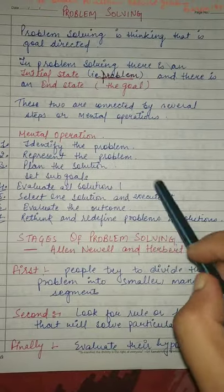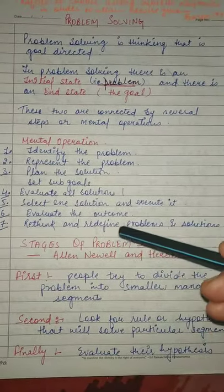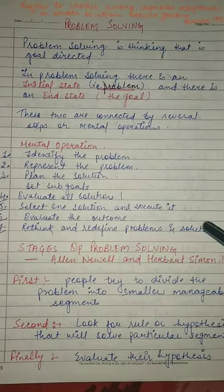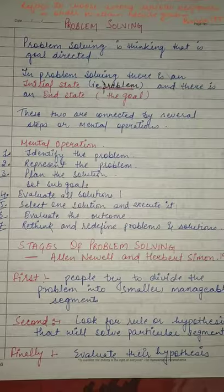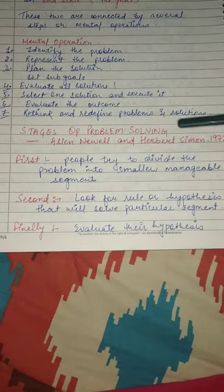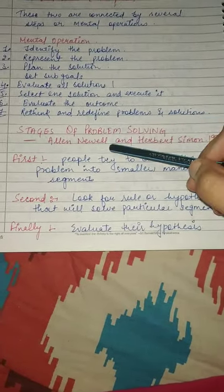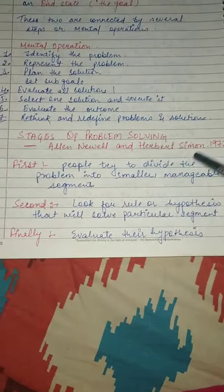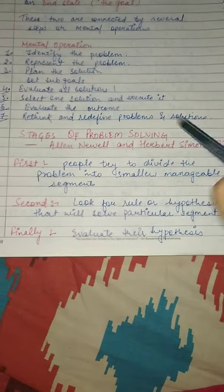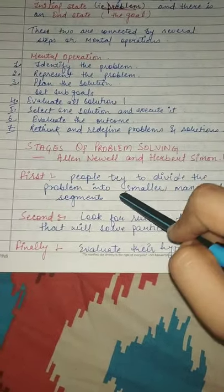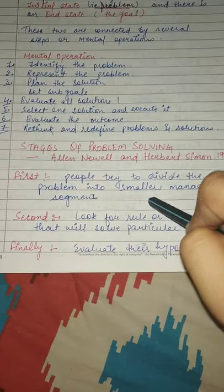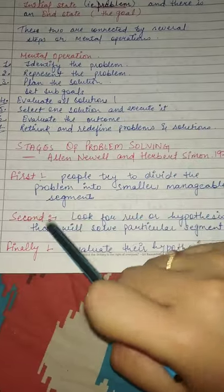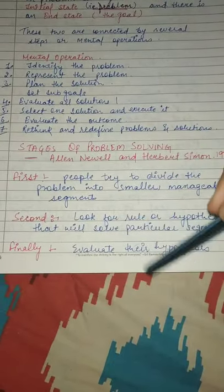Rethink and redefine problem and solution — इसमें still सोचते हैं कि कौनसी और भी अच्छी ways हैं, जो कि हम future में जो भी हमारा play है उसे organize करते time अपने play में involve करेंगे. अब stages of problem solving — ये stages Alan Newell and Herbert Simon ने 1972 में दिया. First stage में problem को divide करते हैं smaller segments में. Second में उसके लिए hypothesis generate करते हैं. Third and final stage में उस hypothesis को evaluate करते हैं.